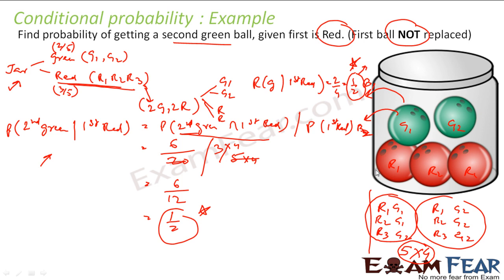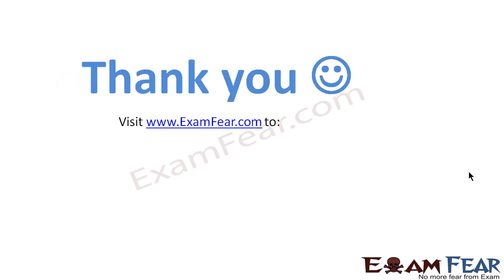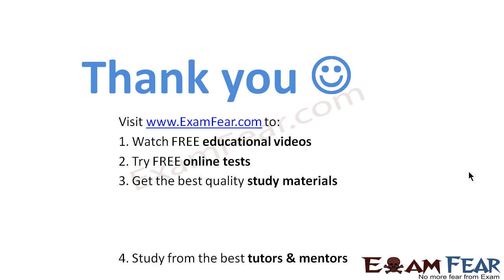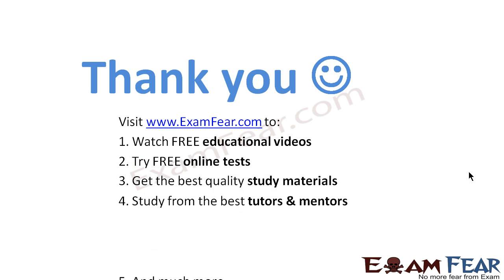The key tricks in the without-replacement question were: finding 6 possible outcomes for second green and first red, and recognizing that the sample space has only 20 elements, not 25. Thank you. Visit ExamFear.com to watch free educational videos, try free online tests, and get the best quality study materials.